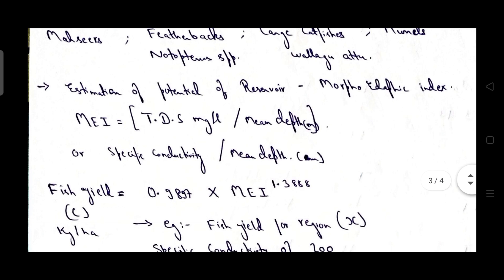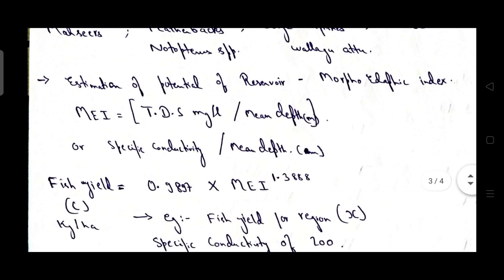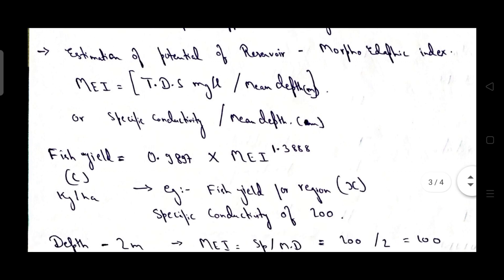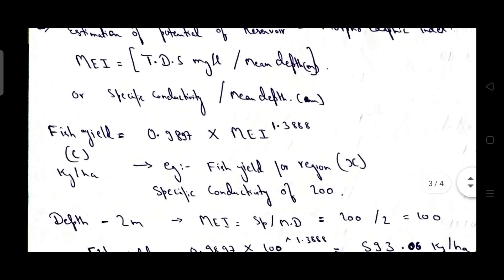Then estimation of potential of reservoir. So basically for estimation of potential of reservoir there is an index that is known as morphoedaphic index. We use this for estimation of potential of reservoir. Formula for morphoedaphic index is TDS that is mg per liter upon mean depth or another formula is specific conductivity divided by mean depth.